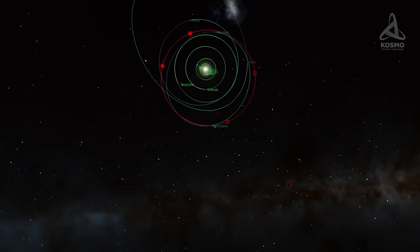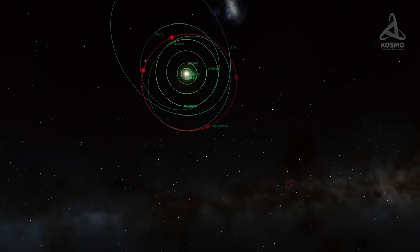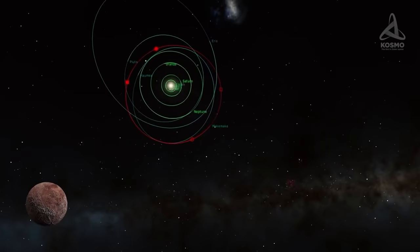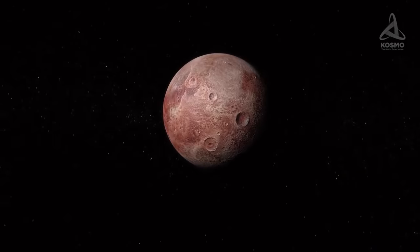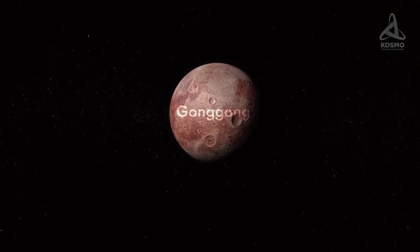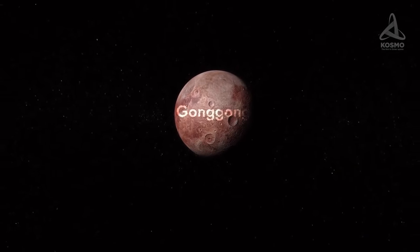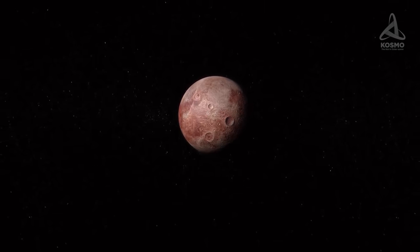This earns Makemake the status of the fourth largest trans-Neptunian object, coming after Pluto, Eris and Haumea. However, it may still be beaten by Gong Gong, whose parameters still haven't been estimated with a satisfying degree of accuracy.